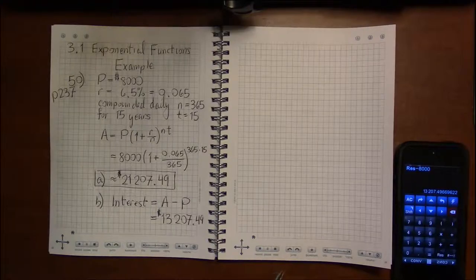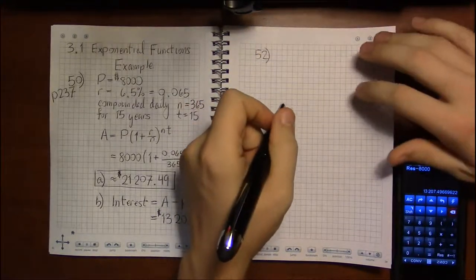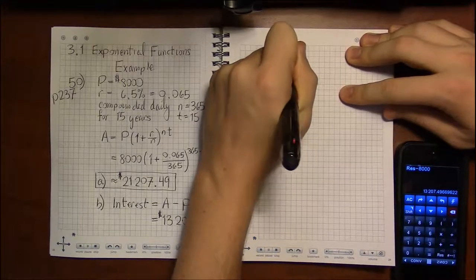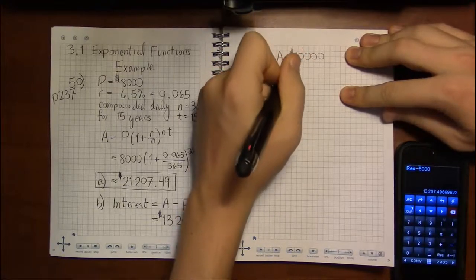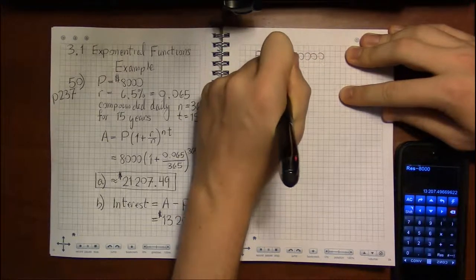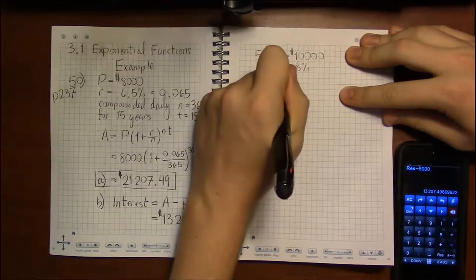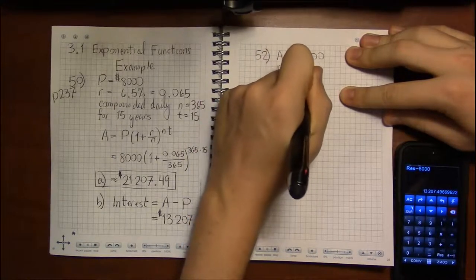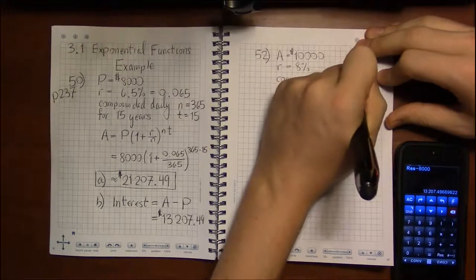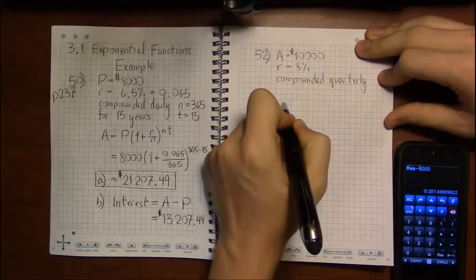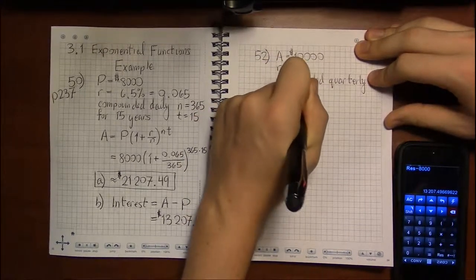Let's mix things up a little bit and do 52, where we're given a goal of having $10,000 in an account. And in this case for 52, it's an account that's earning 8% interest annually, and it's being compounded quarterly. And we're asked, what do we have to initially invest so that in 10 years' time we reach our goal?